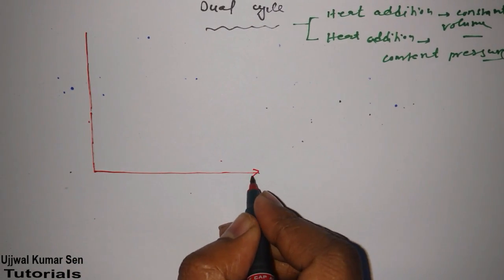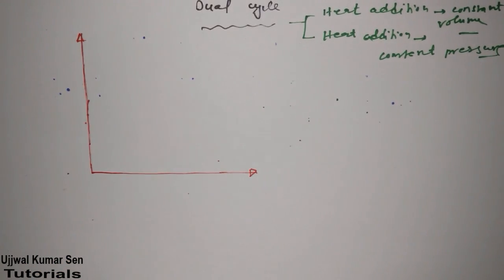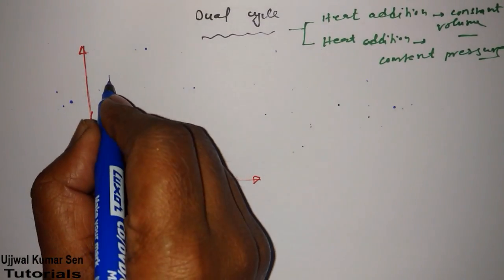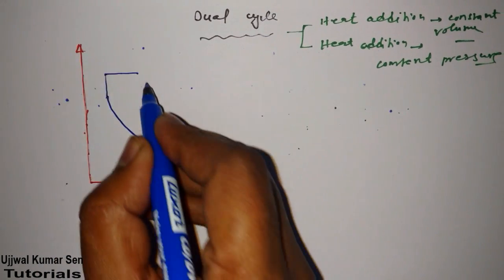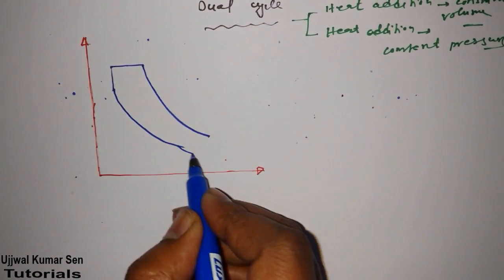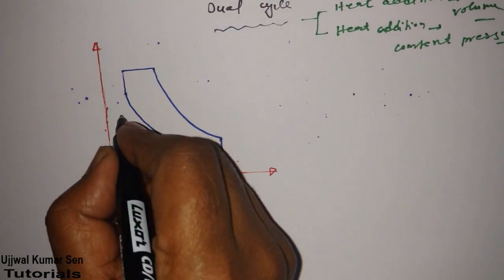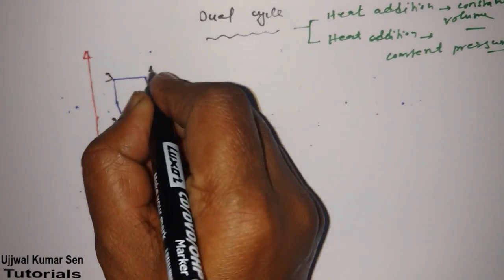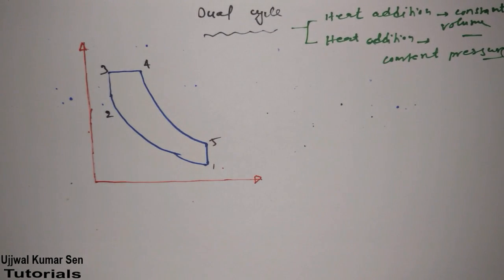Here is the PV diagram for the dual cycle. The points are labeled: this is 1, this is 2, this is 3, this is 4, and this is 5. As I mentioned earlier, the dual cycle is a five-process cycle.